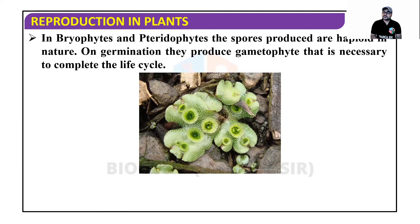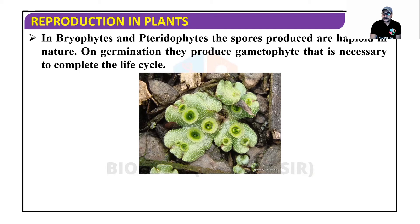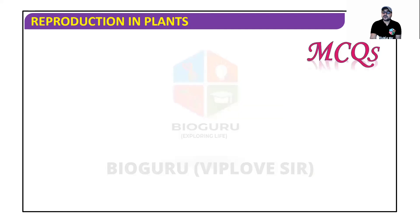On germination, the haploid spores produce a gametophyte. The haploid spores form the gametophyte, which is necessary to complete the life cycle. For example, gemma in liverworts.